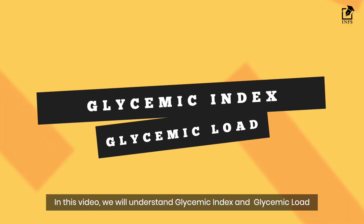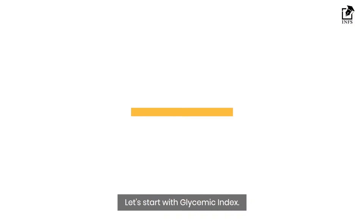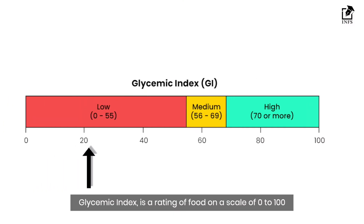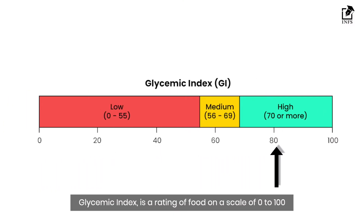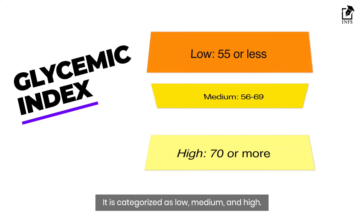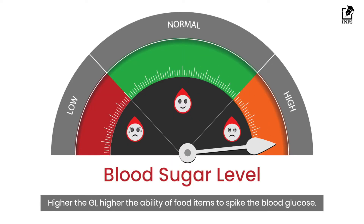In this video we will understand glycemic index and glycemic load and how they can affect blood sugar levels. Glycemic index is a rating of food on a scale of 0 to 100, categorized as low, medium, and high. The higher the GI, the higher the ability of a food item to spike blood glucose.